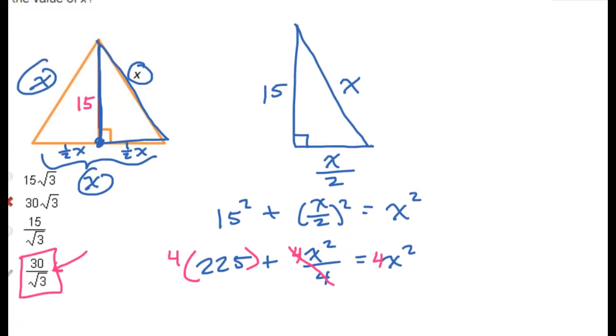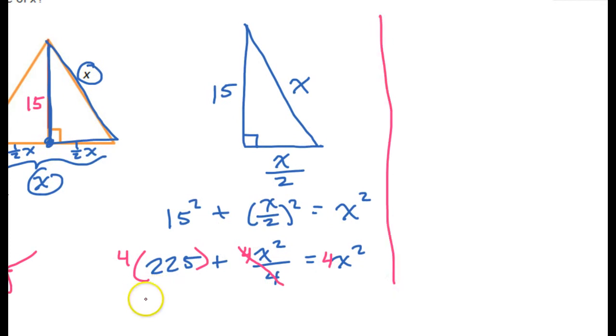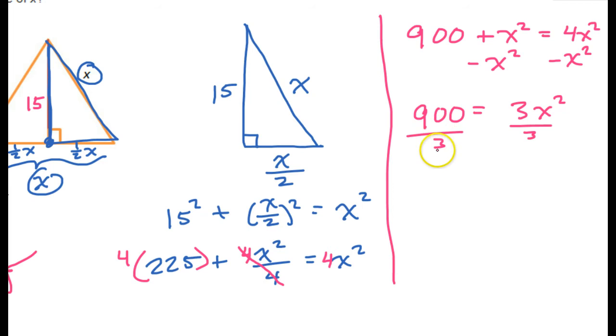So, if we multiply 225 by 4, that's going to be 900. So we will have 900 plus x squared is equal to 4x squared. Now, we're trying to solve for x. So let's subtract x squared from both sides to pull these like terms together. So that will give us 900 is equal to 3x squared. Now that's going to give us, well, if we divide both sides by 3, that's going to give us 300 is equal to x squared.